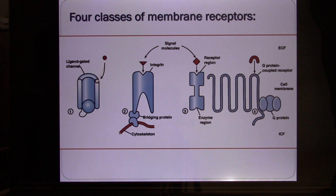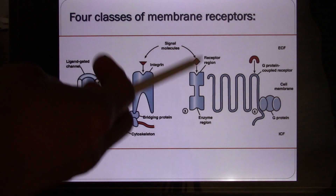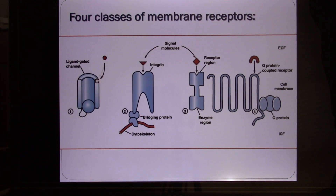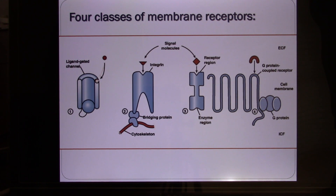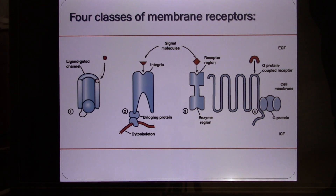The third type is enzyme receptors. Enzymes are very important in biology — they lower the energy required for chemical processes to happen at lower temperatures. For example, your digestive system has many digestive enzymes that make digestion happen at normal body temperature.